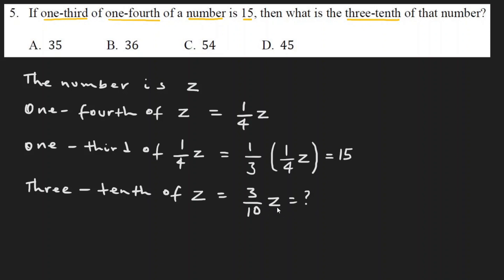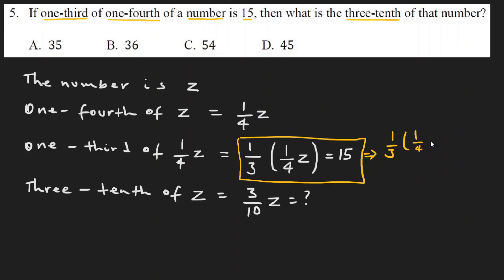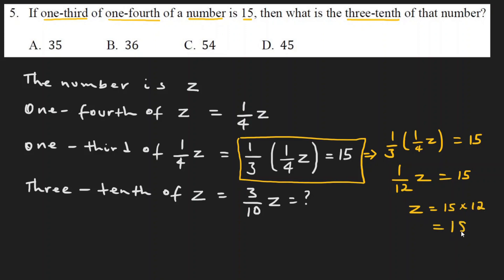Three tenths of Z. The equation is: one third of one fourth of Z is equal to 15. One third of Z is equal to 15.